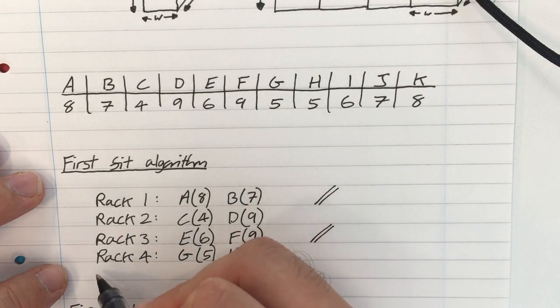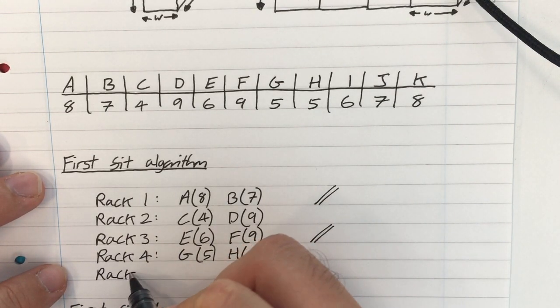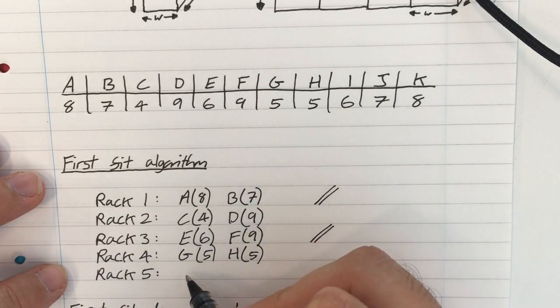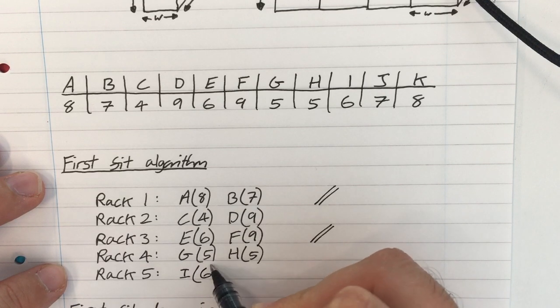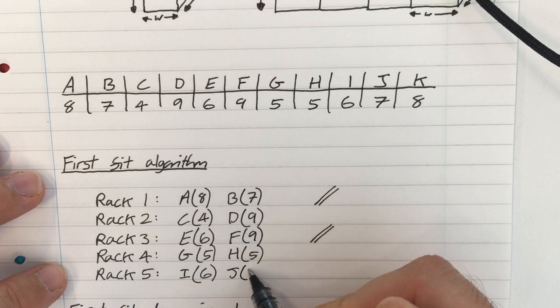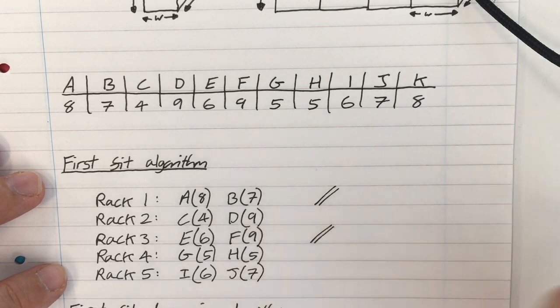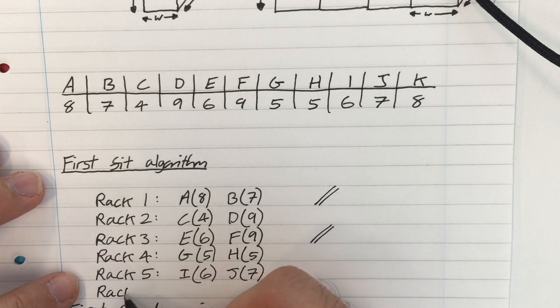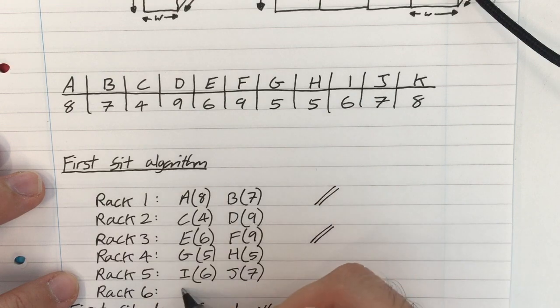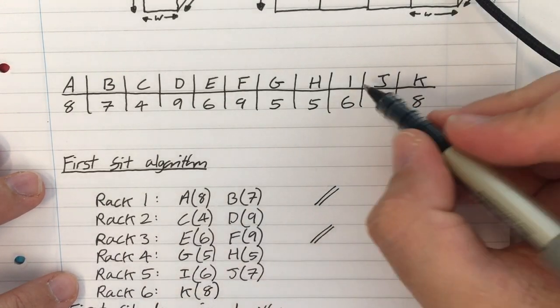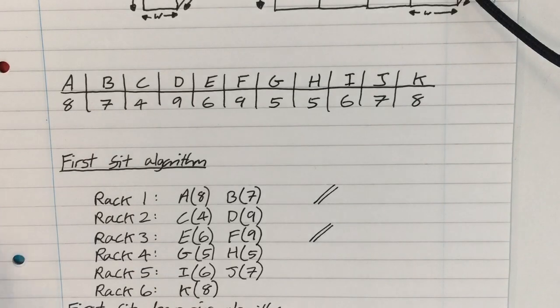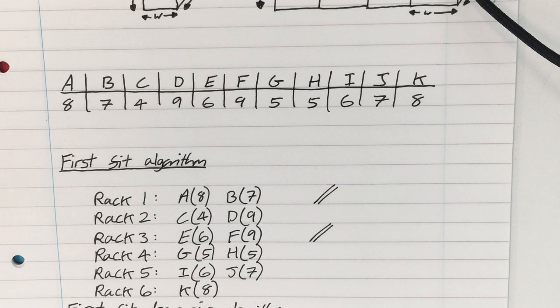So I pick up box I, and I've got to put it in a new rack. So I, that's 6. J is 7. So that makes 13. I'm not going to fit K in there, so I've got to open up rack 6 to put box K in. And that's 8. And that is now complete. So that is the first fit algorithm. You take a box, and you put it into the first available rack. Are you happy with that?